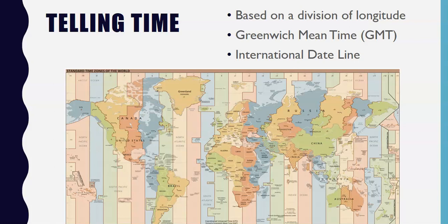The international date line is located at 180 degrees longitude. Its position deviates from 180 degrees at various points to accommodate the nation states in those areas. If you go east of the international date line, you go back a day; if you move west of it, you move one day forward. The international date line is the point at which one day becomes another day.